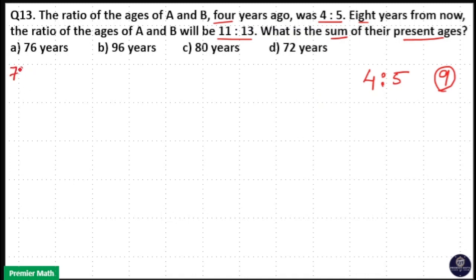So 76 minus 8 is equal to 68, which is not divisible by 9. So option A is eliminated. 96 minus 8 is equal to 88, which is not divisible by 9. So option B is eliminated.